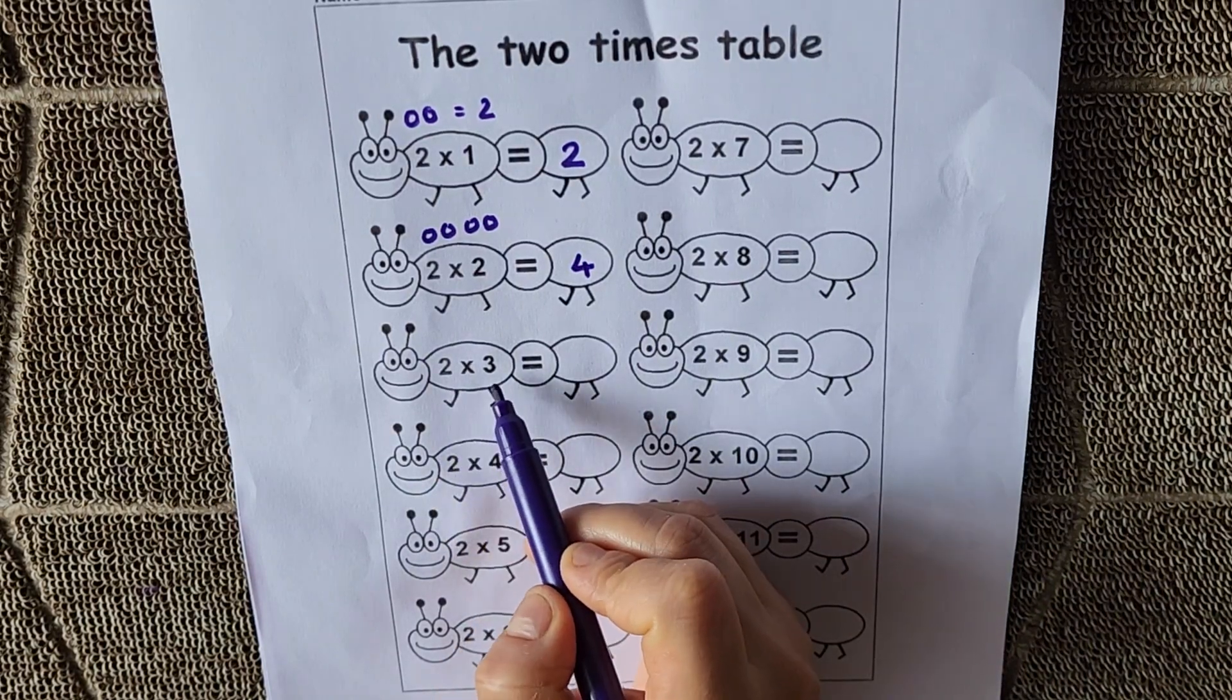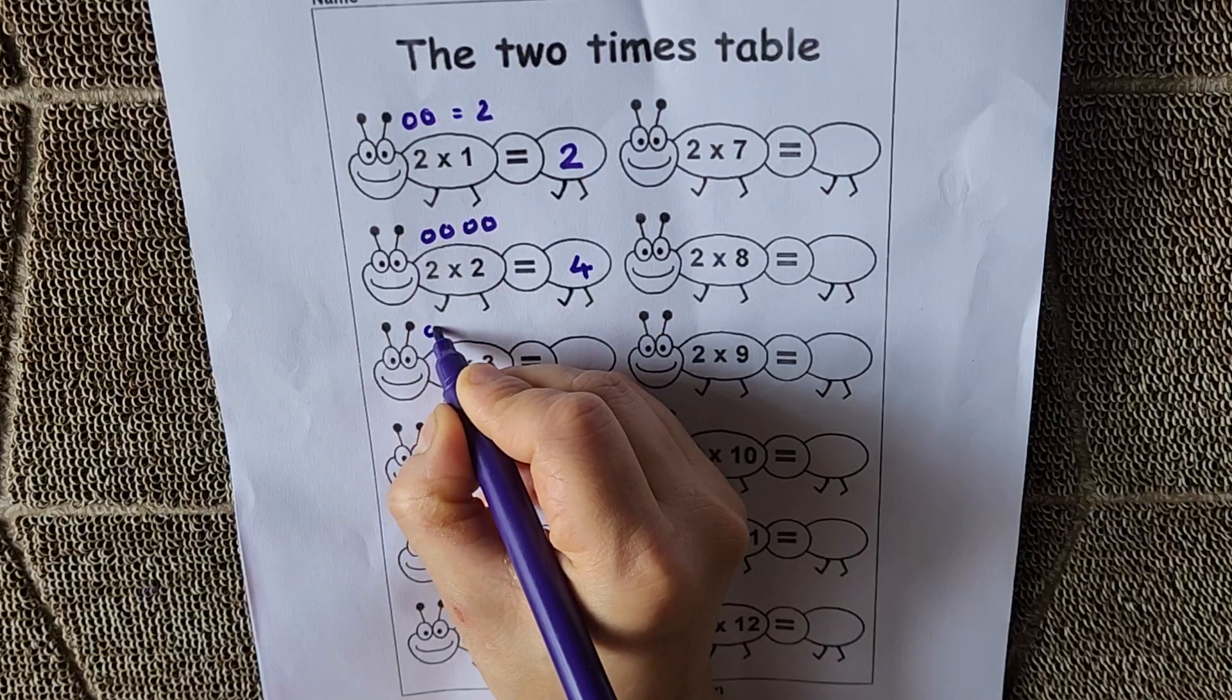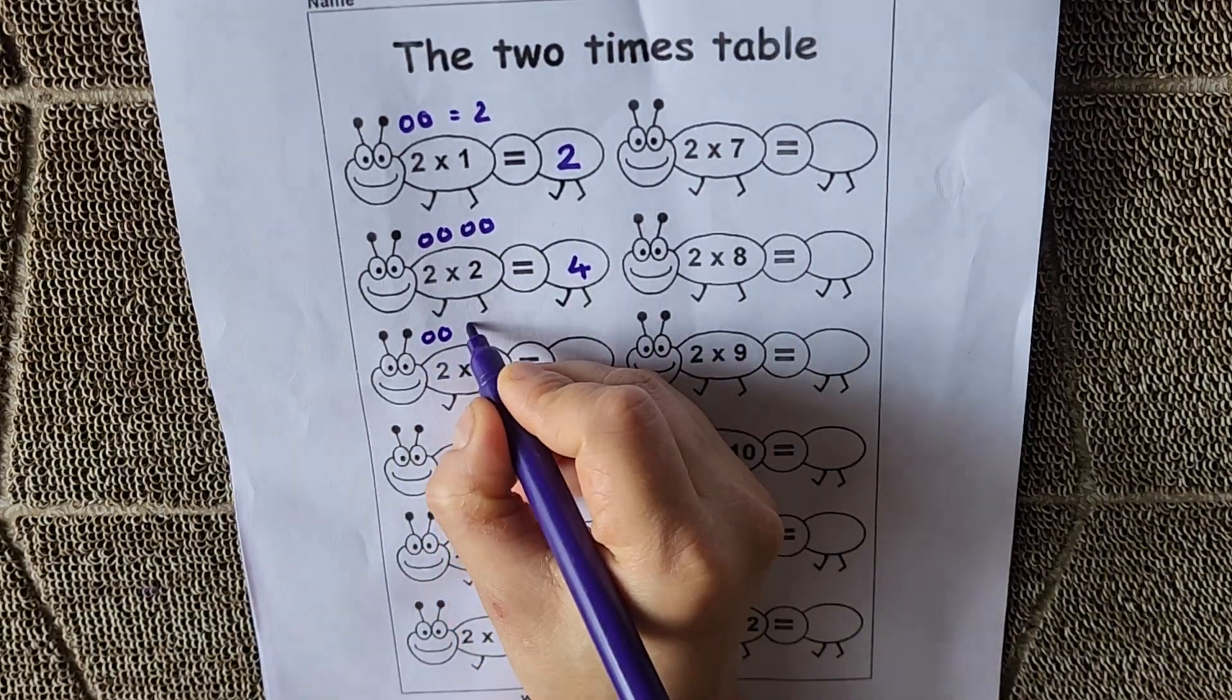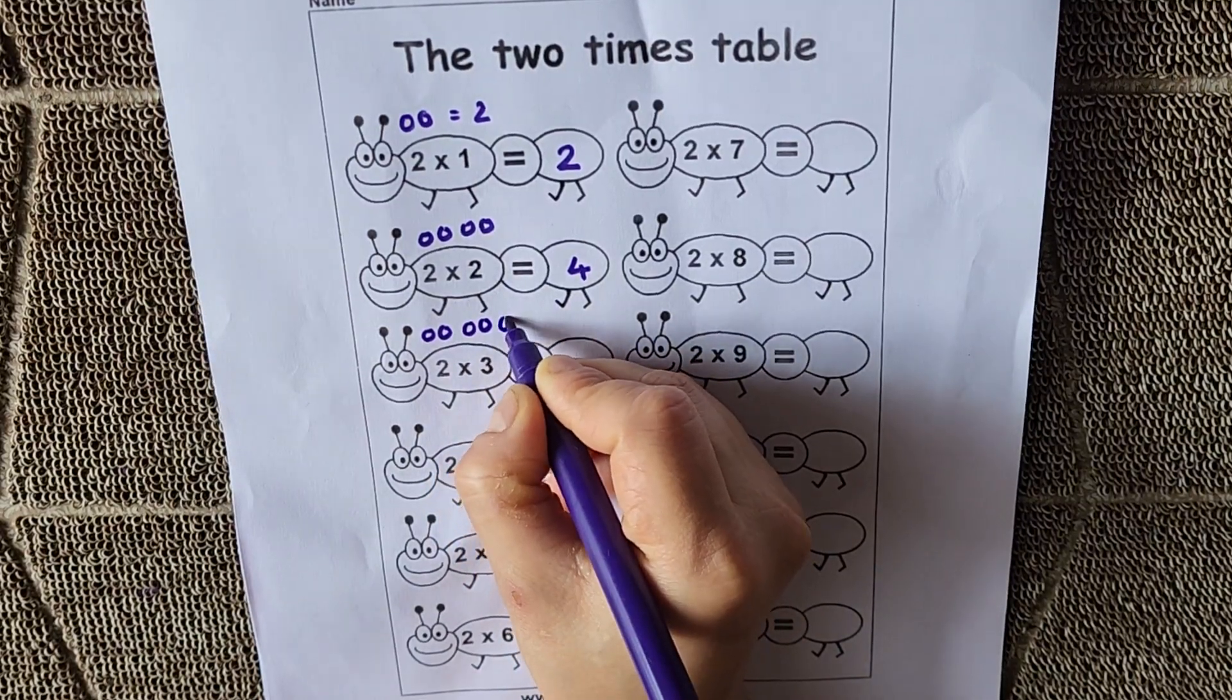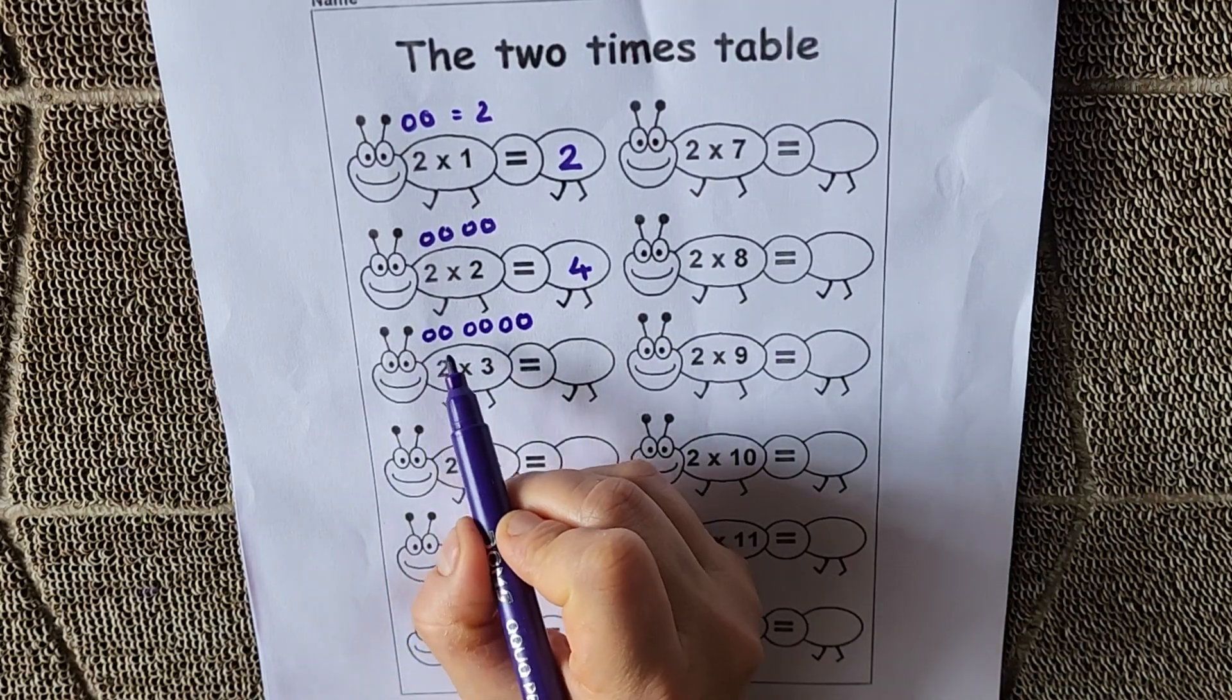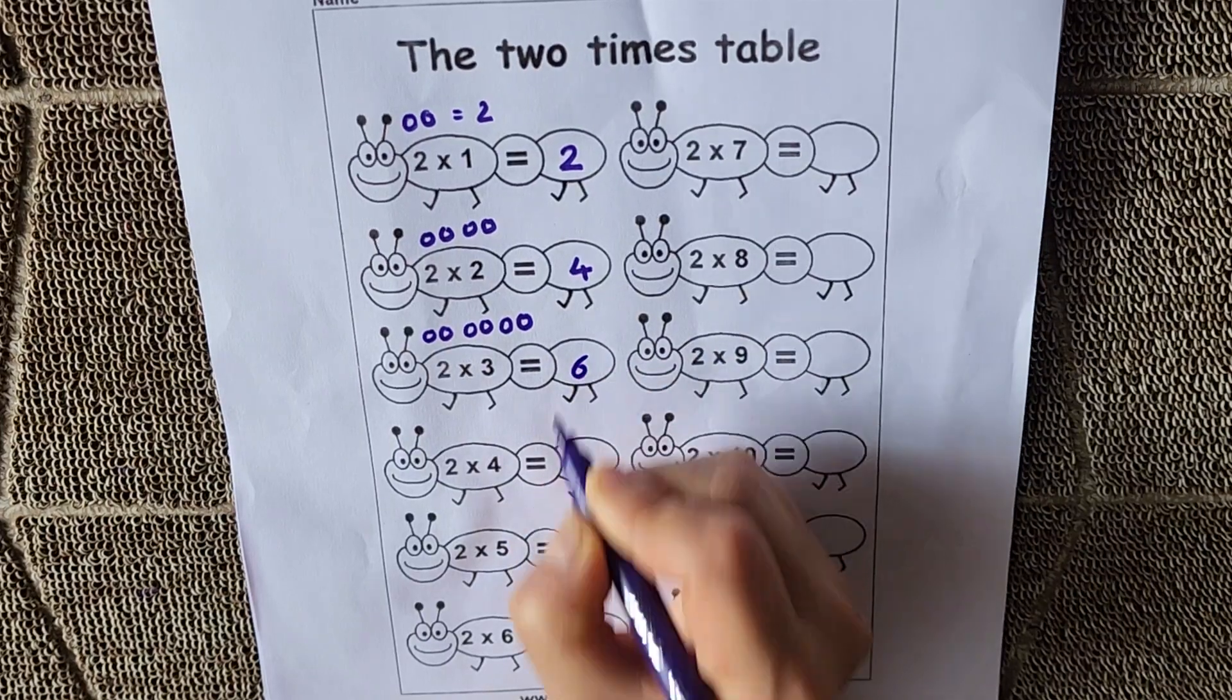Next, 2 3s are 6. 2 balls 3 times. 1, 2, 3. So total number of balls are 1, 2, 3, 4, 5, 6. So 2 3s are 6.